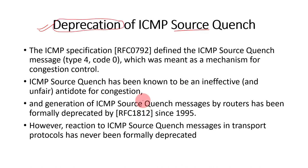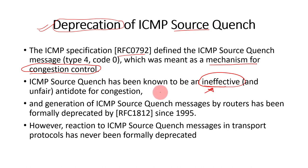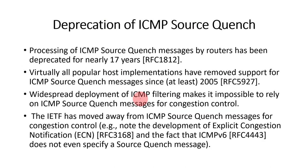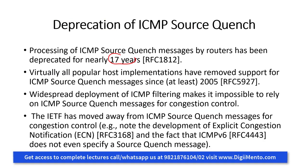This ICMP source quench is now deprecated and is no longer in use. It was originally specified in RFC 792 and was created as a mechanism for congestion control. However, source quench has been known to be an ineffective antidote for congestion. Because it is ineffective, by 1995 all routers had deprecated this ICMP source quench message.